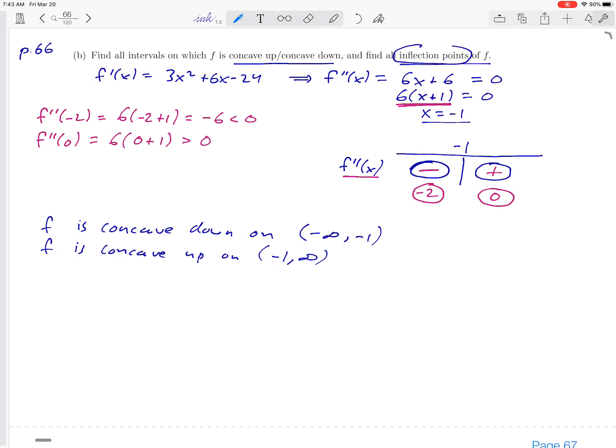And then remember they also asked us about inflection points. An inflection point is a place where the concavity of our function changes. Notice that from our sign chart we can see that -1 is such a point. We change from concave down over here to the left to concave up over here to the right because we go from a negative to a positive second derivative.